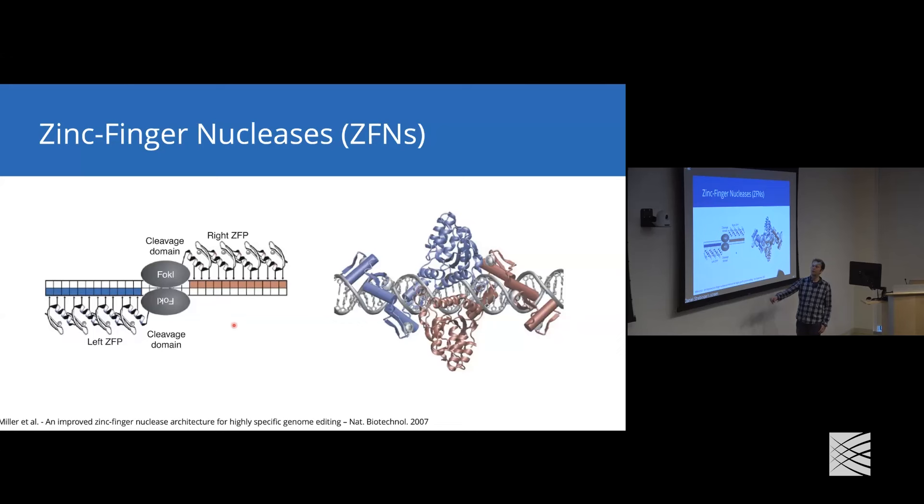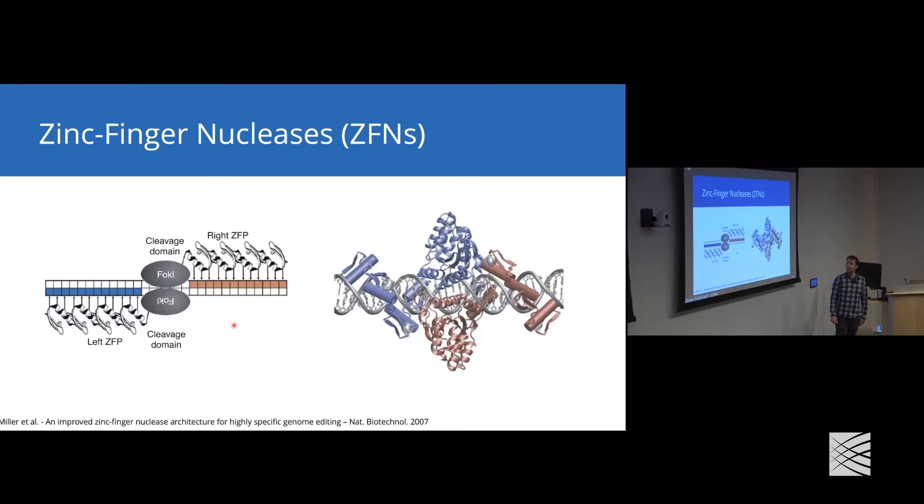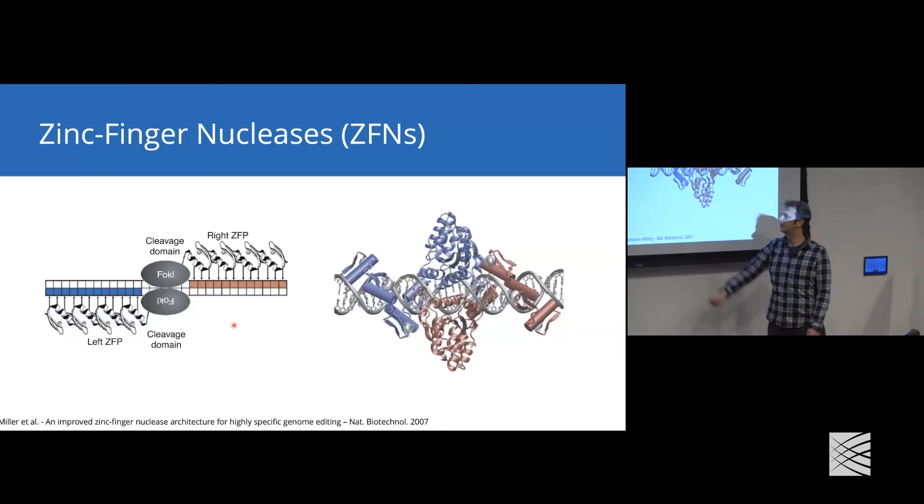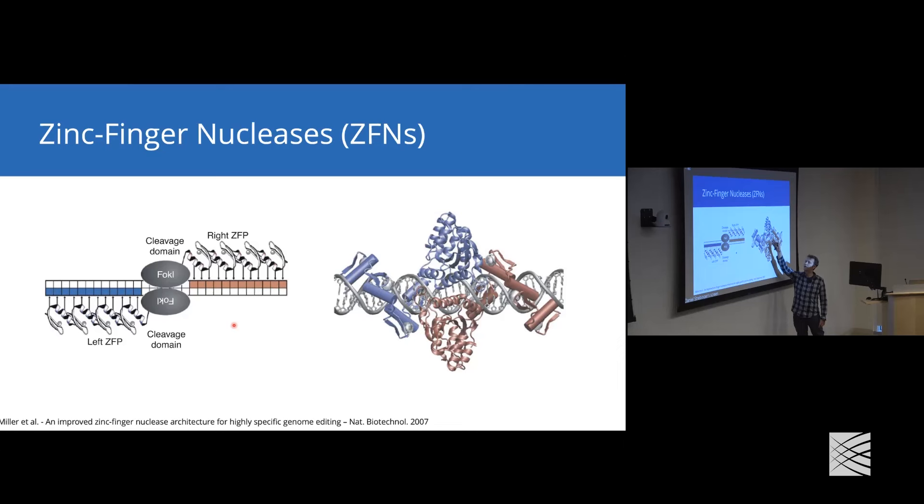One restriction enzyme called FokI is composed of an N-terminal DNA binding domain and a C-terminal cleavage domain. By fusing the cleavage domain of FokI onto an array of zinc fingers, we can localize the FokI domain at a specific region in the genome. However, FokI acts as a dimer, so we need two FokI domains to come together. As you can see in the crystal structure, the zinc fingers form contact with the DNA. We're using two zinc finger nucleases where the two FokI domains come together, forming an active dimer which can introduce a double-strand break.